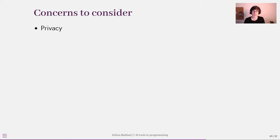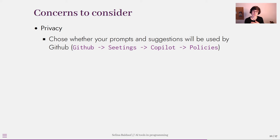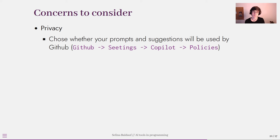The first concern is privacy. AI tools collect some data about us — in the case of GitHub Copilot, that's Microsoft collecting it. You have the possibility to change your privacy options; for example, with GitHub Copilot you can choose whether your prompts and suggestions will be used by GitHub or not. If in doubt, you should always read the privacy guidelines.